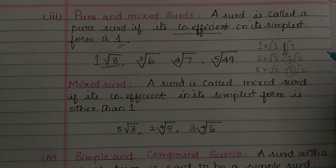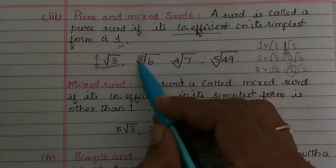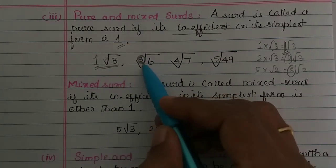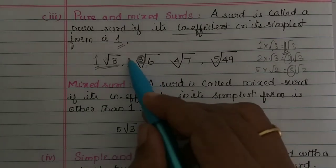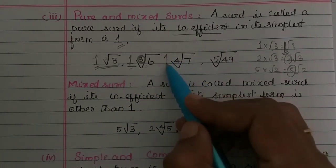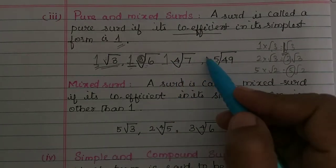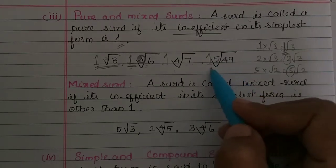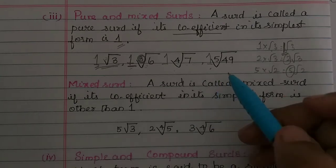If the coefficient is 1, then it is called a pure surd. For example, the cube root of something with coefficient 1, or the fourth root of 7 where the order is 4 but the coefficient is 1 — these are pure surds. The fifth root of 49 also has coefficient 1, so it is a pure surd.